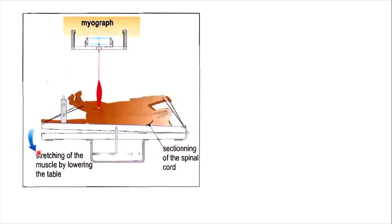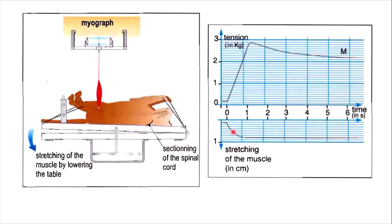Then he lowered the table downwards, which would stretch this muscle. In the results, we see here at the bottom the stretching of the muscle. We're lowering the table, so we have a stretch by about 0.8 centimeters, and this was translated into a significant increase in the tension within the muscle. The increase was quite rapid within the first second almost.